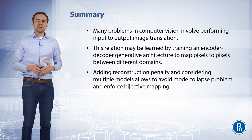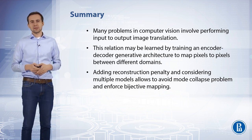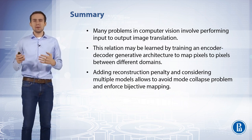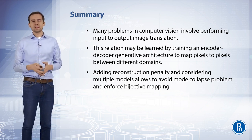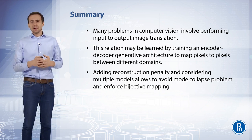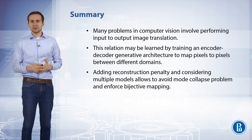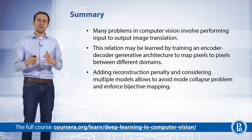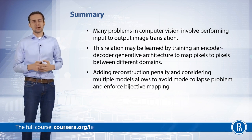So many problems in vision aim at performing pixel-to-pixel image translation. This is a relation that may be learned by training an encoder-decoder generative architecture that maps pixels in one domain to pixels in another domain. We may regularize learning by adding a reconstruction penalty and considering multiple models, which allows us to avoid the so-called mode collapse problem and enforce the objective mapping.